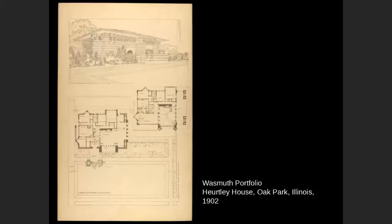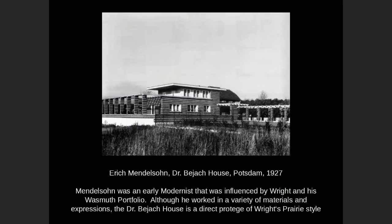This is the Hurtley House, also seen on our walk. Here's the plan and rendering of it. At the Hurtley House, Wright used different colors of brick and really emphasized the horizontal lines. This influenced early European modernists — this is the Dr. Bajak House in Potsdam, just outside Berlin, from 1927 by Eric Mendelsohn. It's 17 years after the Wasmuth Portfolio but still a pretty direct link between Wright's Prairie Style and early European modernism.